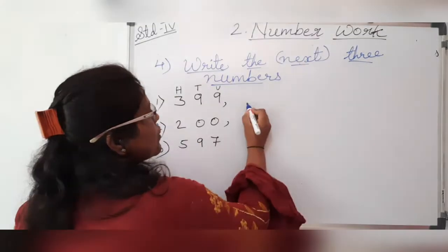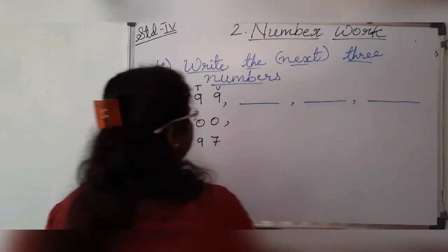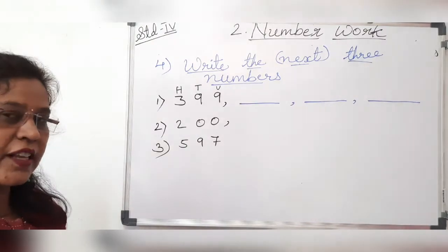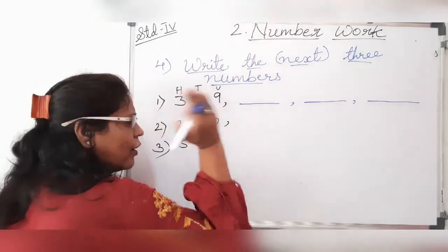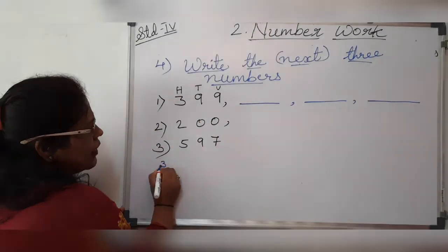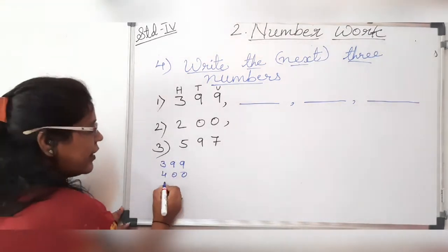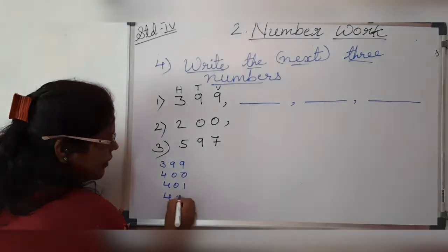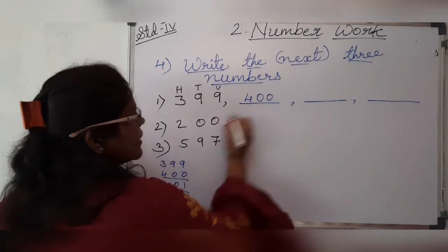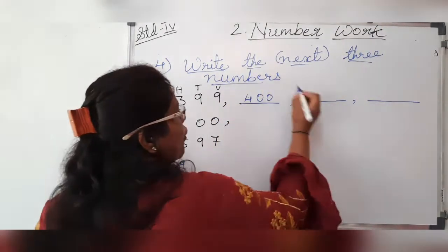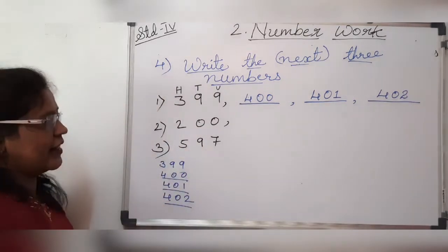Three hundred and thirty-nine — what comes after three hundred and ninety-nine? If you are not able to recall, on rough work you can write: after three hundred and ninety-nine, four hundred comes. After four hundred: four hundred and one, and four hundred and two. So the first number is four hundred, then four hundred and one, and four hundred and two.